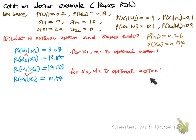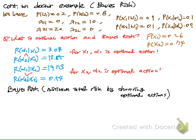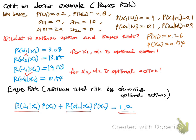The Bayes risk is found by choosing the optimal action for each x that minimizes the total risk. For x1, we chose action 1 because it is the optimal action. For x2, we take action 2. The total risk is 1.2, and this is the Bayes risk for this example.